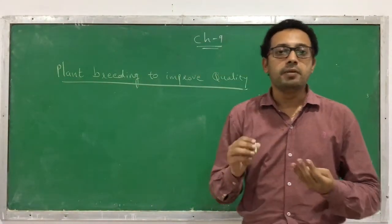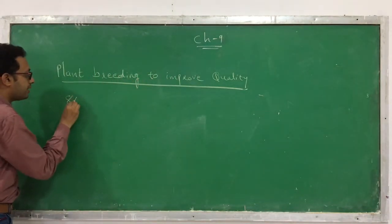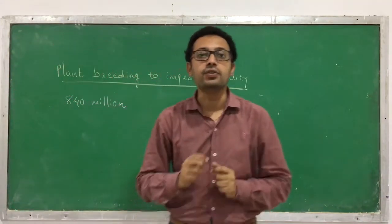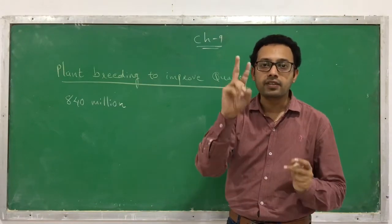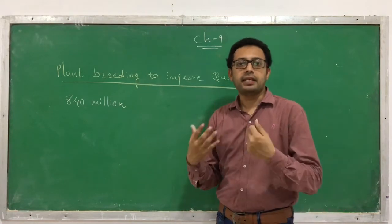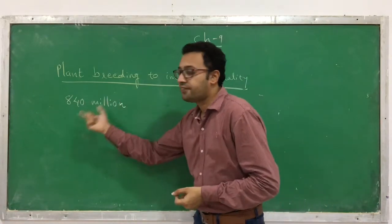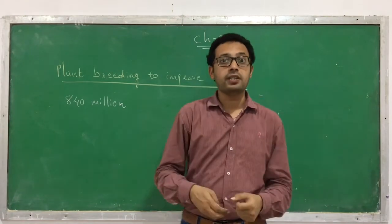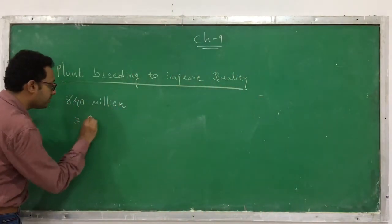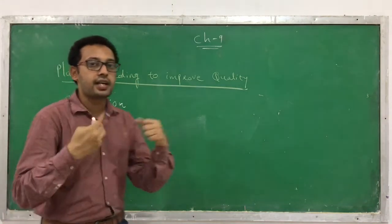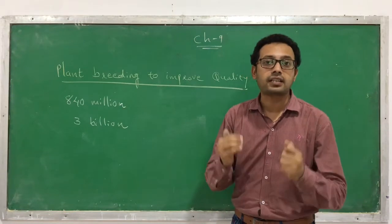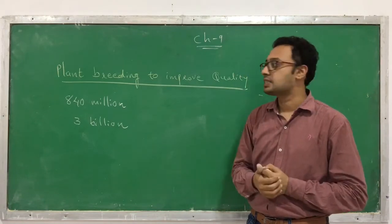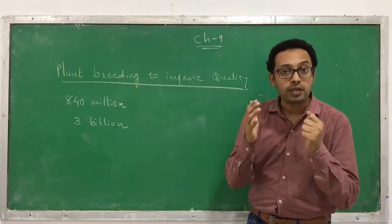Why are we performing plant breeding to improve the quality of a plant? Because in the world, 840 million people do not get a sufficient quantity of food — they do not even get basic meals. Apart from that, 3 billion people in the world do not have access to quality food products. This is a present scenario even in states like Gujarat.